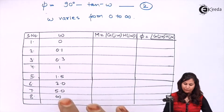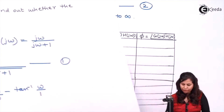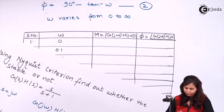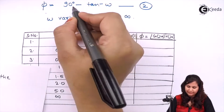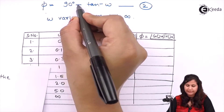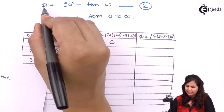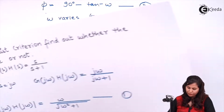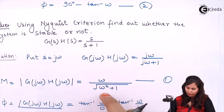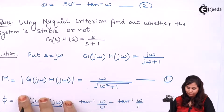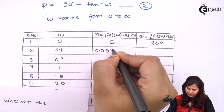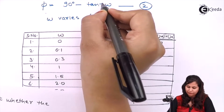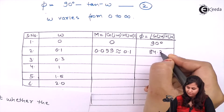For ω equals to 0, magnitude equals 0 upon √(0² + 1) which is 0, and phase angle is 90 degrees minus tan inverse of 0, that is 0 degrees, so phase angle is 90 degrees. For ω equals to 0.1, magnitude is 0.1 upon √(0.1² + 1), which is approximately 0.1. And the phase angle is 90 minus tan inverse of 0.1, which comes out to be 84.3 degrees.